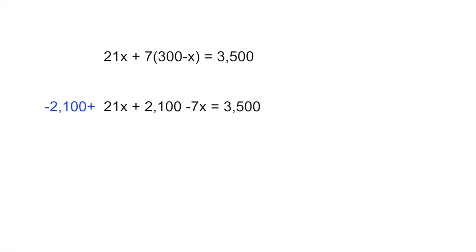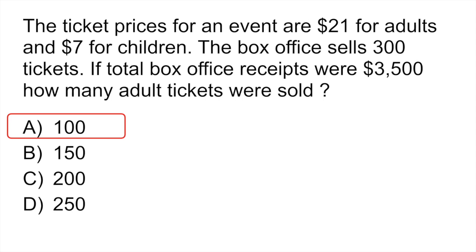Here what you want to do is first get rid of that 2,100 by subtracting 2,100 on the left and doing the same on the right so we can cancel those two terms on the left. If you subtract 21x minus 7x that gives you 14x equals 1,400 on the right side. Now all you have to do is isolate that x by dividing both sides by 14. When you do that it gives you 100. So the number of adult tickets was 100.